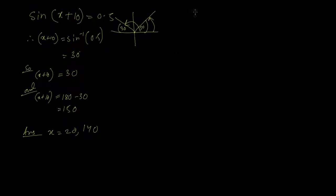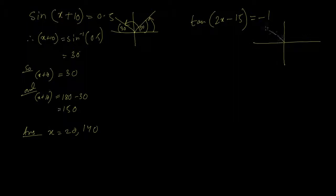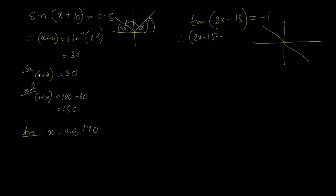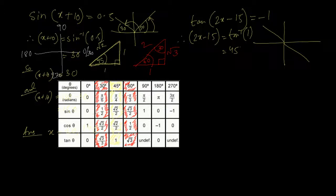Let's do another example: tan(2x − 15) = −1. Since tan is negative, it falls in the second quadrant and the fourth quadrant. The basic angle is found using 2x − 15 = tan inverse of 1 (we take the absolute value, ignoring the negative sign), which gives 45 degrees.